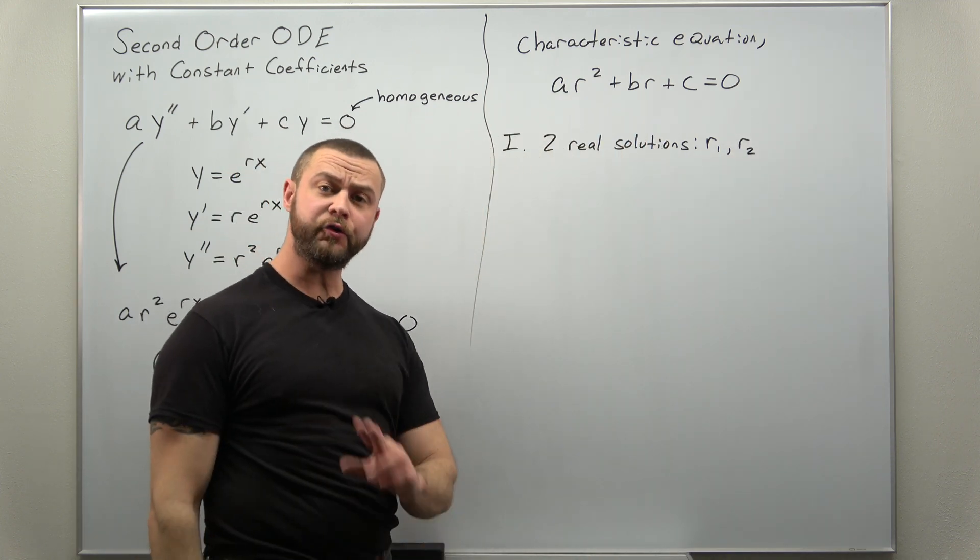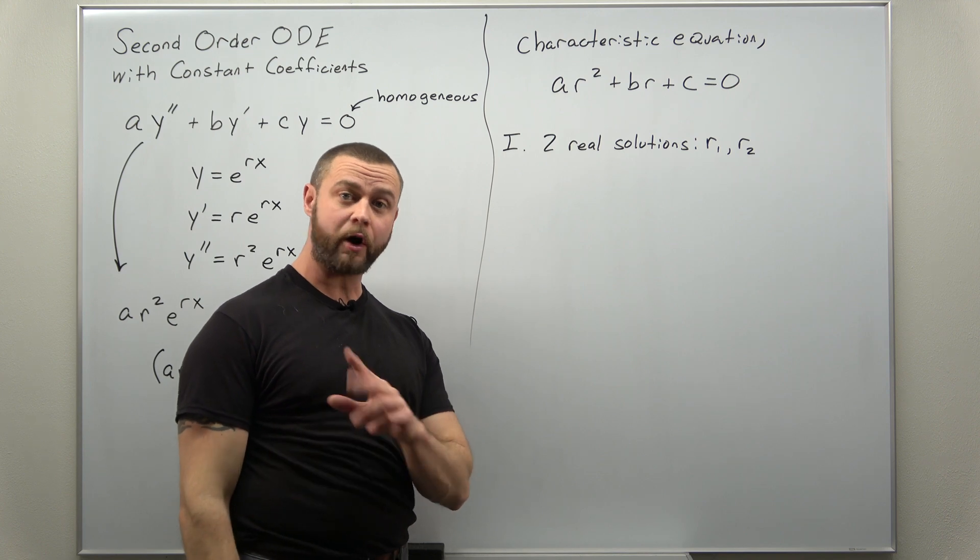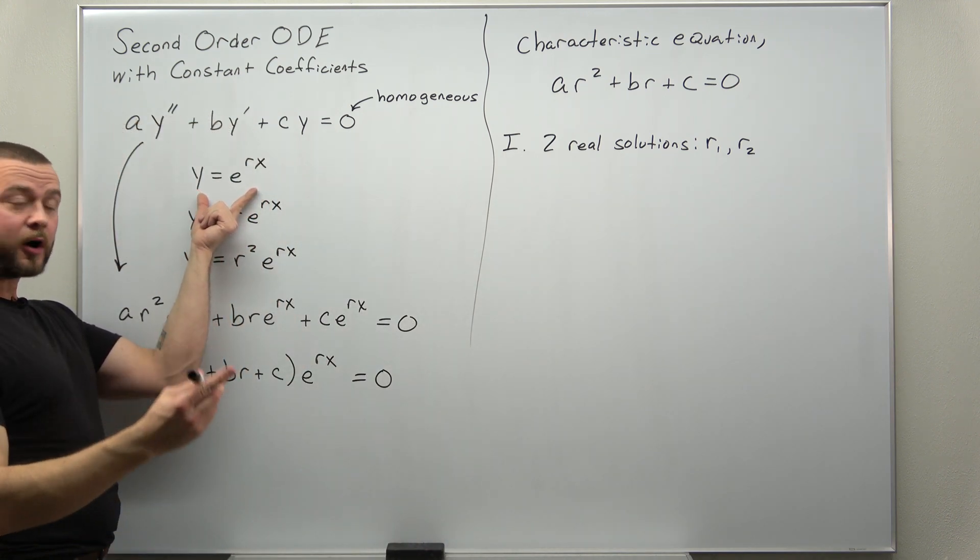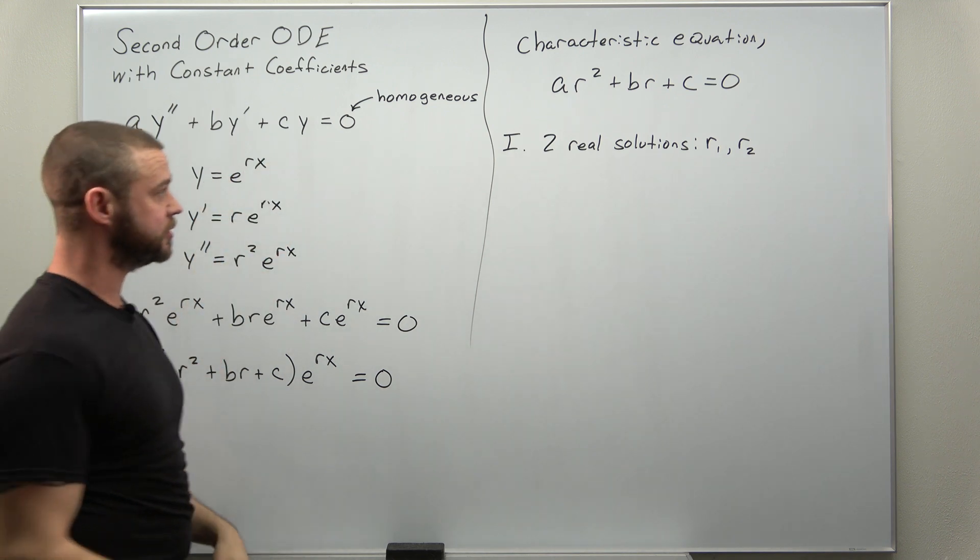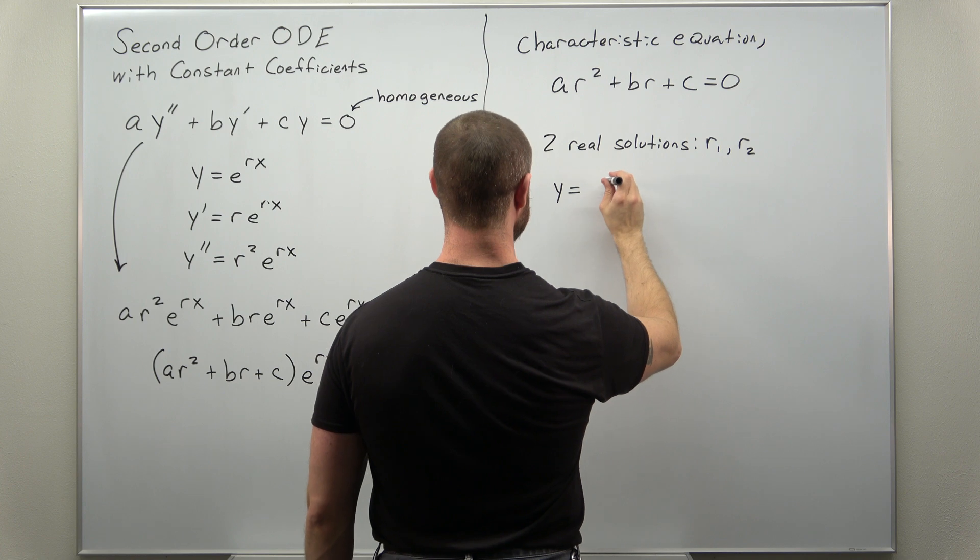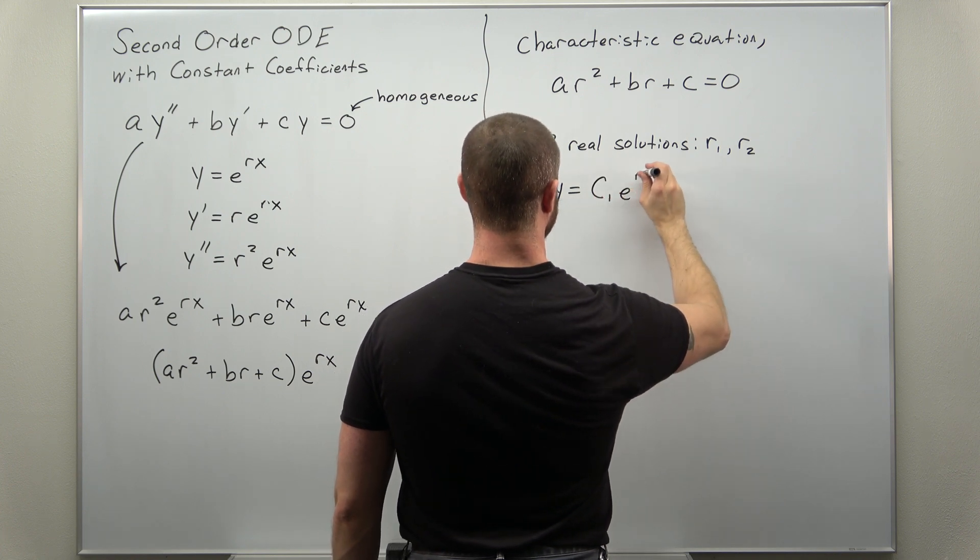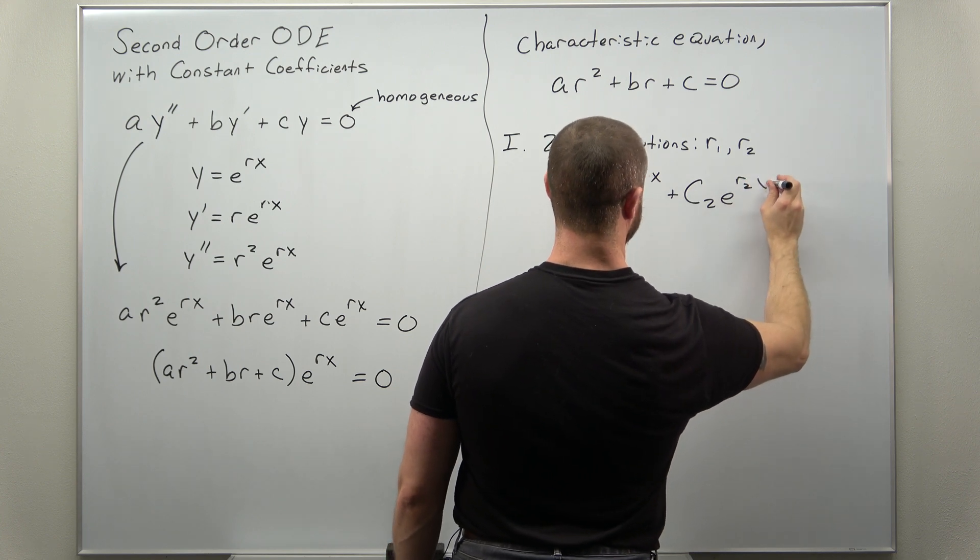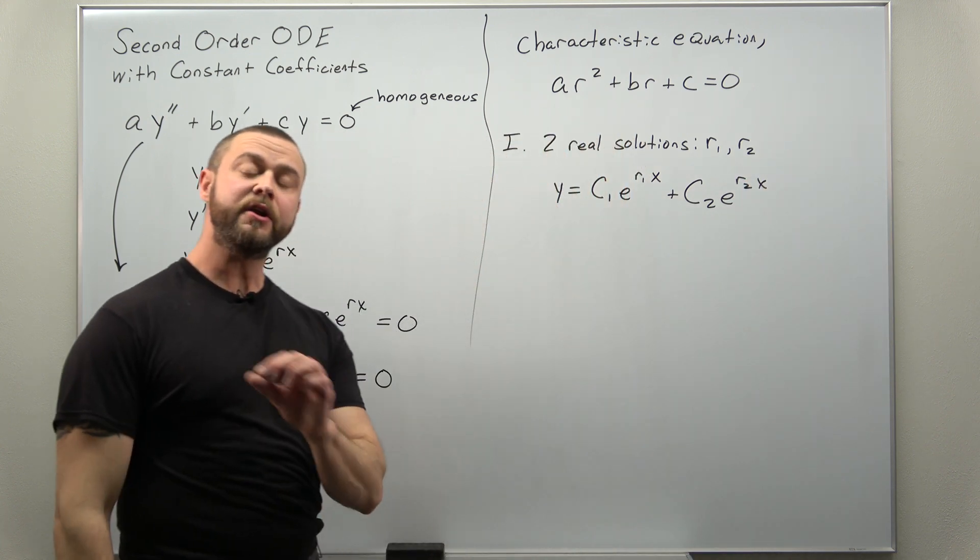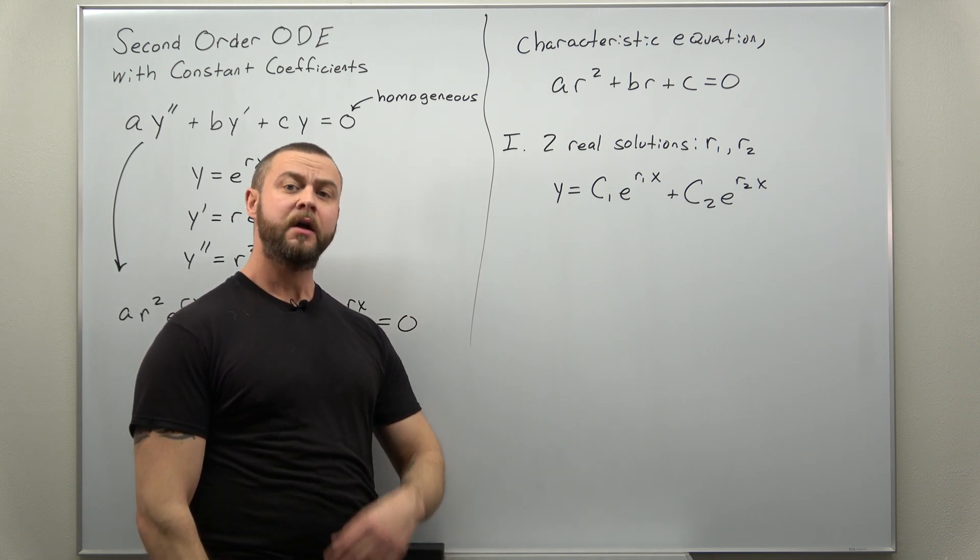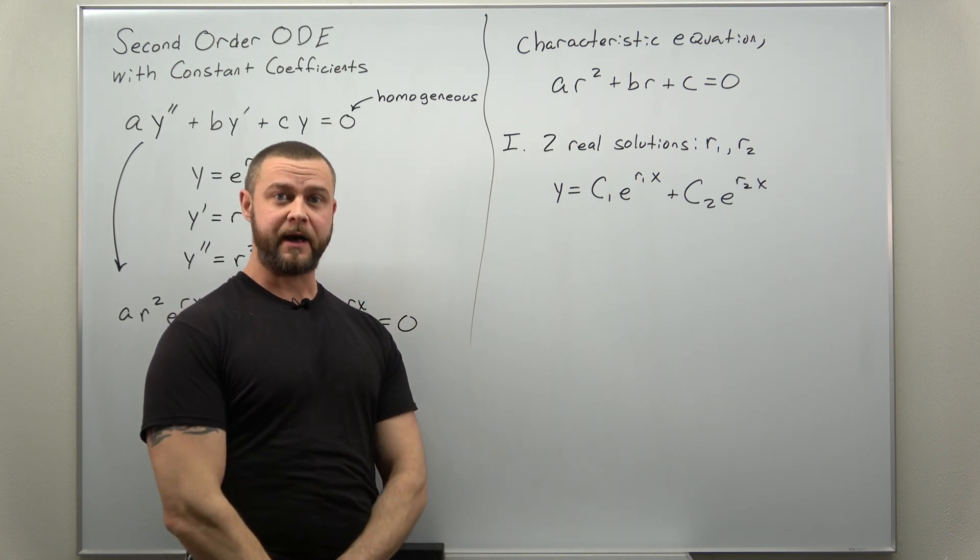If those are your two values for the characteristic roots r, plug them back in here. Each value of r gives you a different exponential function. So our solution to the ODE looks like a linear combination of your two exponential functions: y equals C1 times e to the r1 x plus C2 times e to the r2 x.